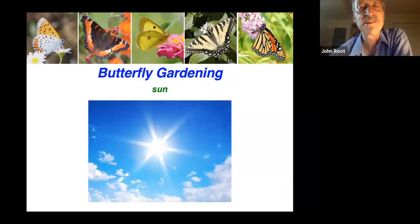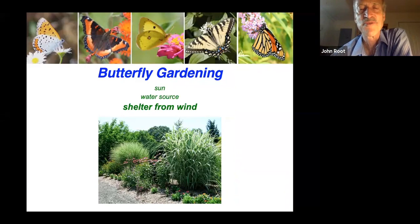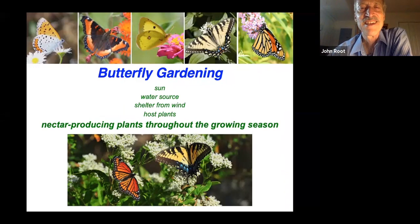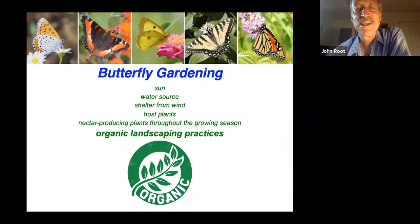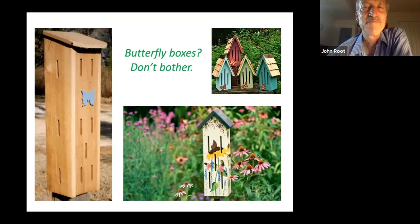Full sun is one consideration — full sun is defined as at least six hours of sun. Being near a water source can be handy to keep new plants irrigated. Shelter from the wind is useful for butterflies. Host plants are absolutely essential so that caterpillars can grow and metamorphosize. Nectar-producing plants throughout the growing season is a must, and organic landscaping practice is very important. Butterfly boxes, on the other hand, are totally unnecessary and useless — no one has ever found a butterfly in a butterfly box. Sometimes you can find spiders in them, sometimes wasps, but never butterflies.